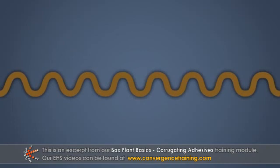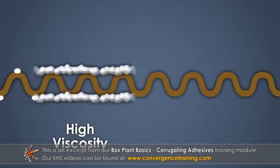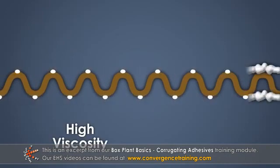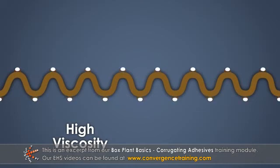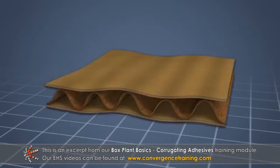If the paste is too thick or has high viscosity, it won't transfer well to or from the glue roll, and once it transfers, it will tend to sit on top of the flute tips. Because it penetrates very slowly into the medium, this can lead to soft, wet board exiting the corrugator.